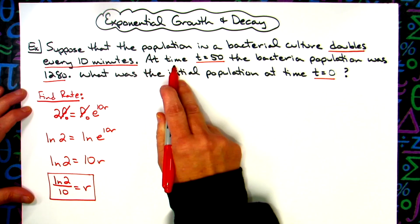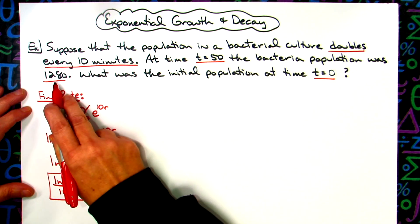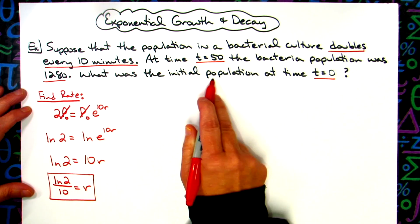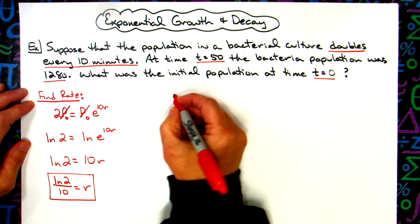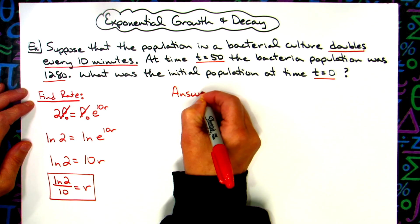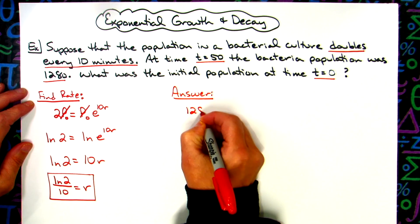What was the initial population at time t equals 0? At time t equals 50, which I'm going to use, the bacteria population was 1280. What was the initial population? So I'm going to again use the PERT formula.